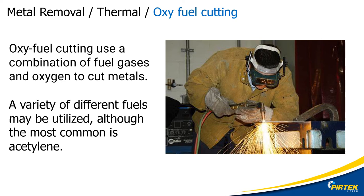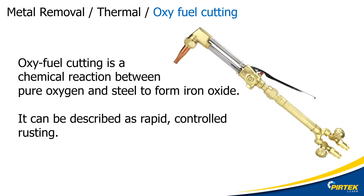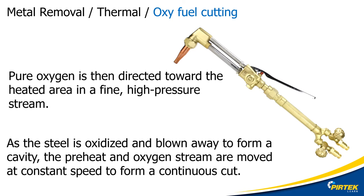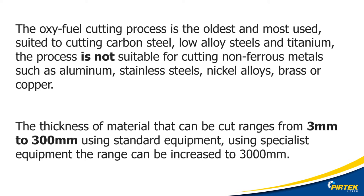Oxy fuel cutting utilizes a fuel gas, usually acetylene, and oxygen to cut metals. It is a chemical reaction between pure oxygen and steel to form iron oxide — it can be described as a rapid controlled rusting. When the lever is pressed on the oxy fuel cutting torch, pure oxygen is directed towards the heated area in a fine high-pressure stream; as the steel is oxidized and blown away it forms a cavity. Oxy fuel cutting is only suitable for ferrous metals — metals with iron and carbon. It is not suitable for aluminium, nickel, brass or copper. It is suitable for materials 3mm to 300mm thick.